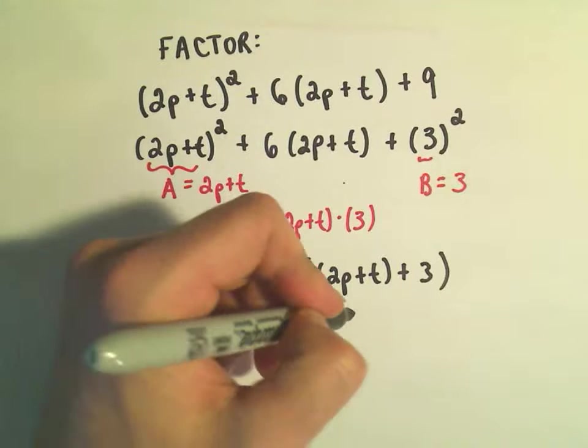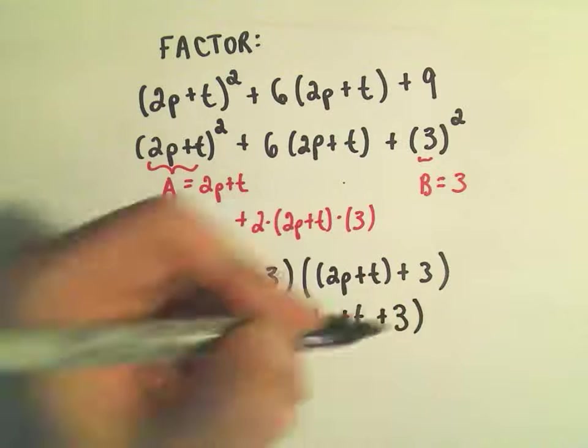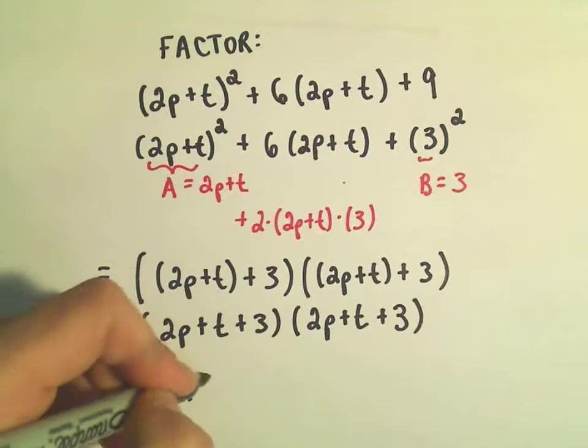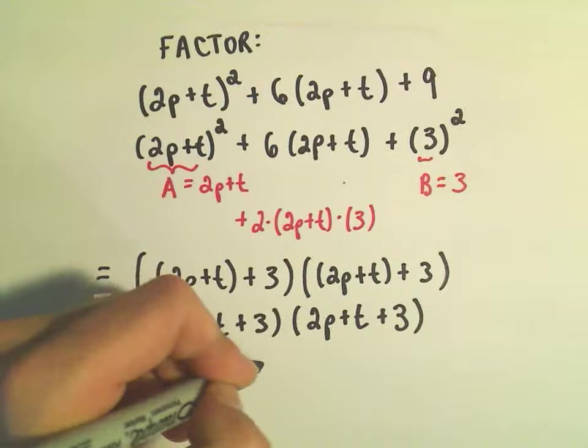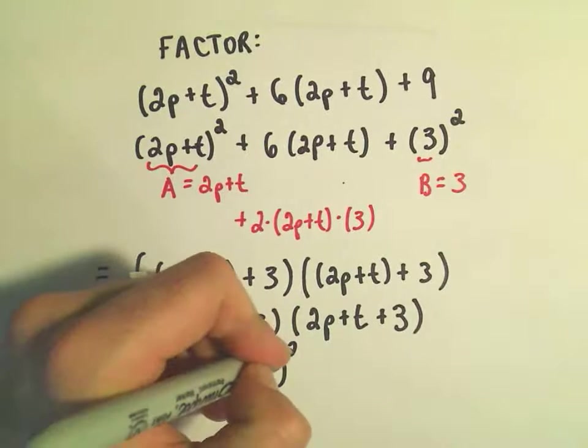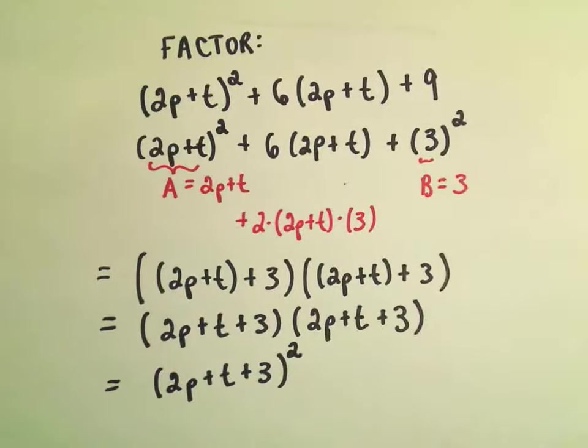And then we have 2p plus t plus 3, or we could rewrite this as 2p plus t plus 3, since we have 1 and 2 of them being multiplied, we could rewrite that as that whole quantity squared.